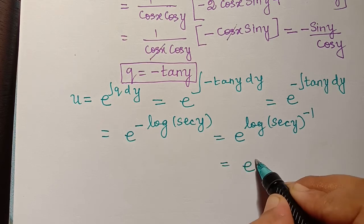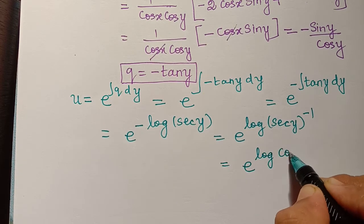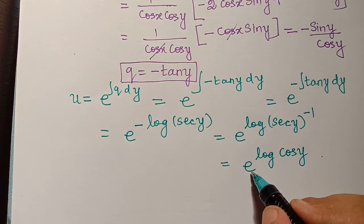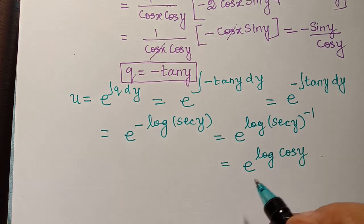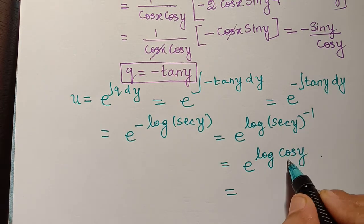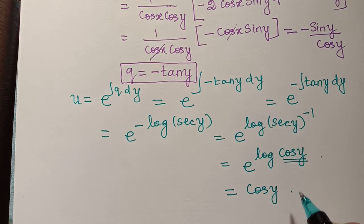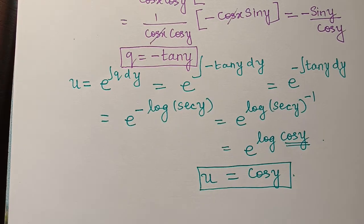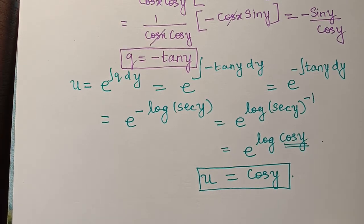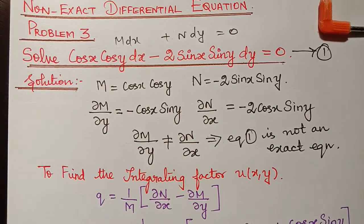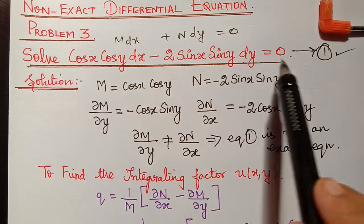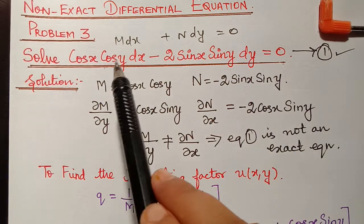Since sec y to the power minus 1 is 1/sec y, which equals cos y, this becomes e raised to the power of log(cos y). We know that e raised to the power of log(a) equals a, so e raised to the power of log(cos y) equals cos y. Therefore, our integrating factor u equals cos y. We now multiply equation 1 throughout by this integrating factor cos y.